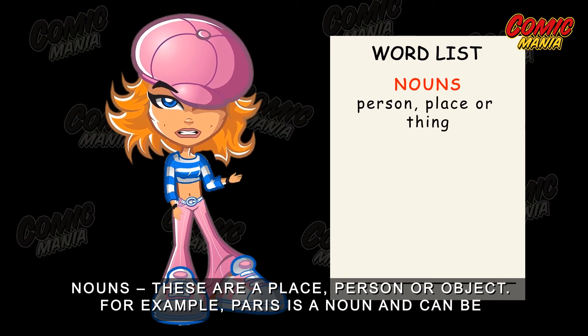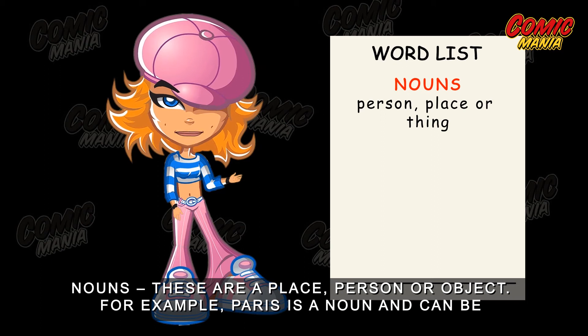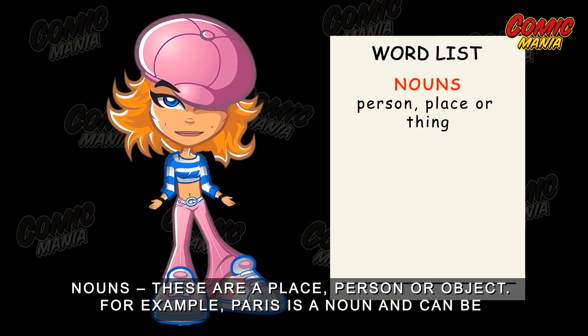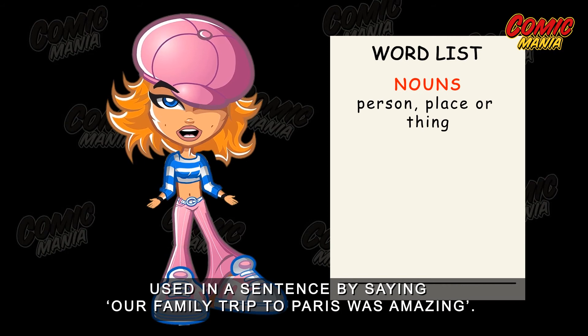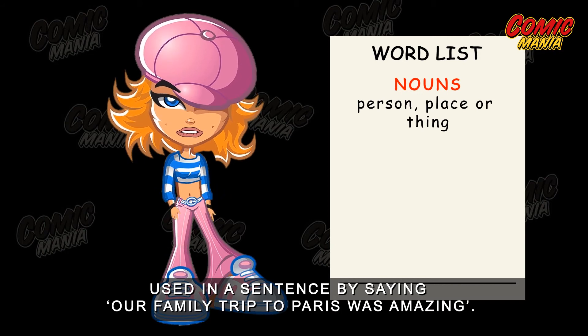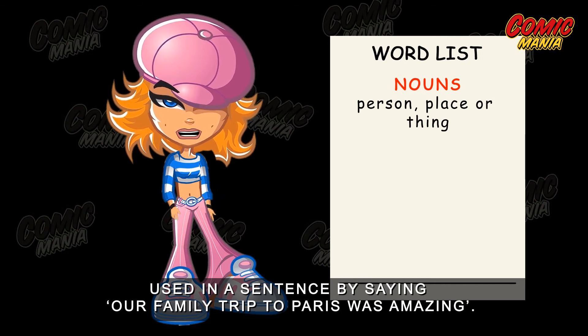Nouns. These are a place, person, or object. For example, 'Paris' is a noun and can be used in a sentence by saying, 'Our family trip to Paris was amazing.'